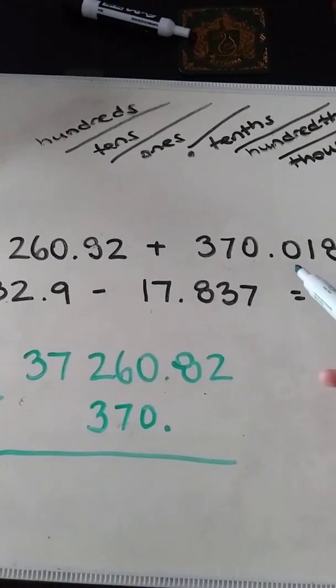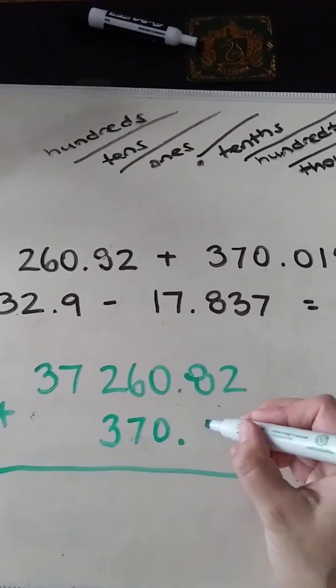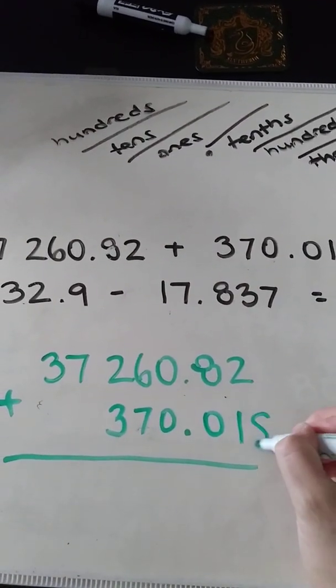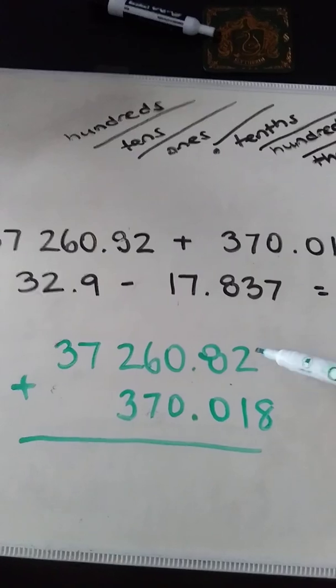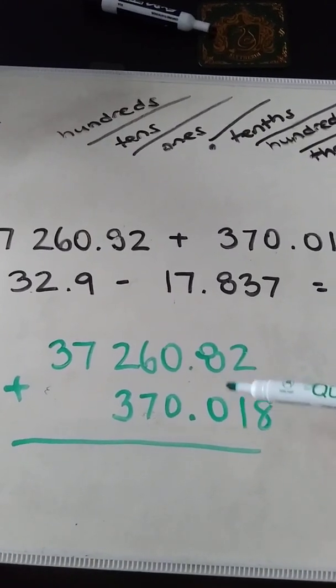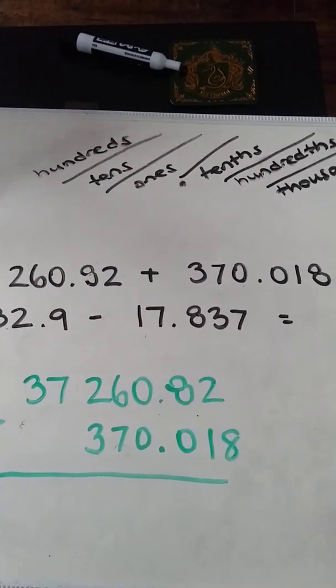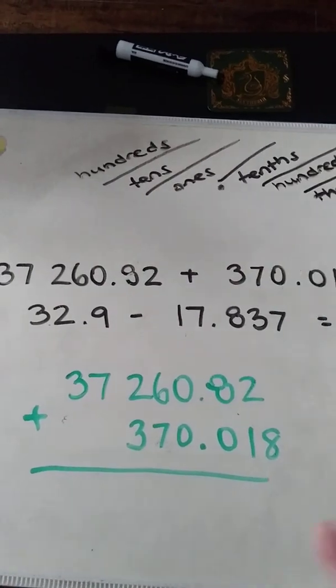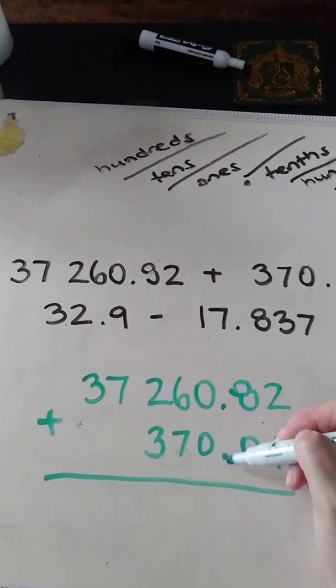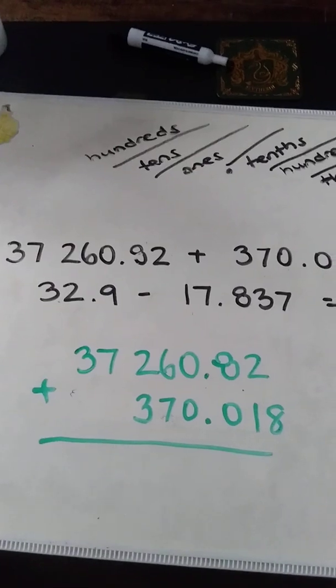And then I have 0, 1, and 8. So again, I made sure that the numbers are where they're supposed to be and they're lined up in the correct place value. And the way I could do this is that I start with the decimal and make sure that's lined up properly and go from there.